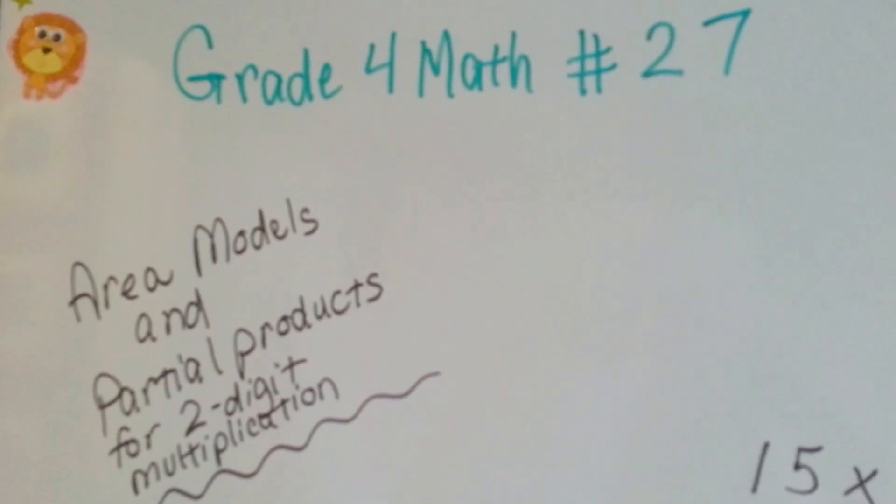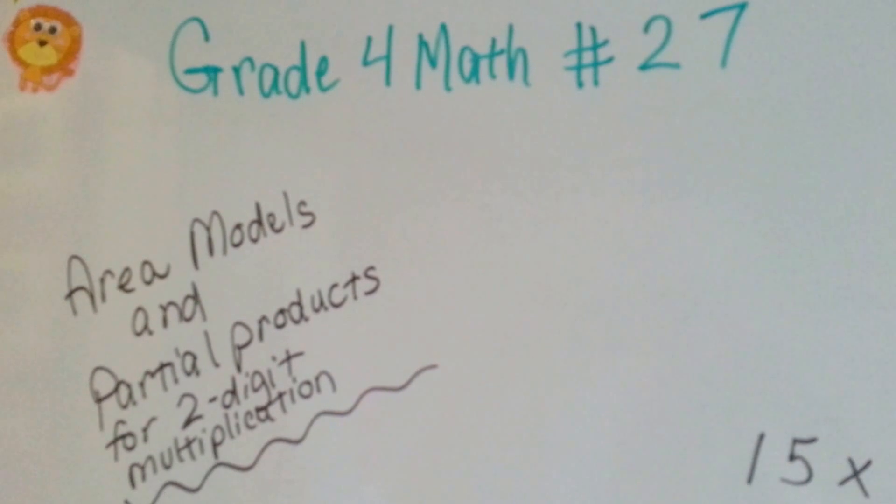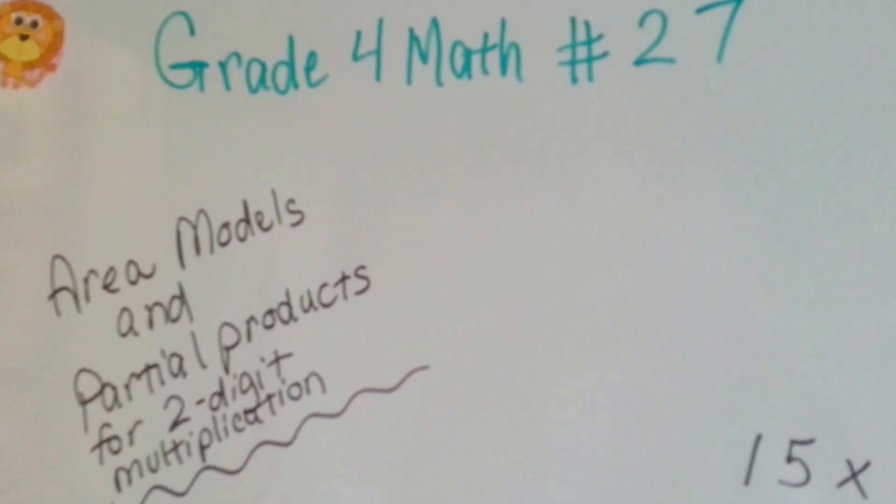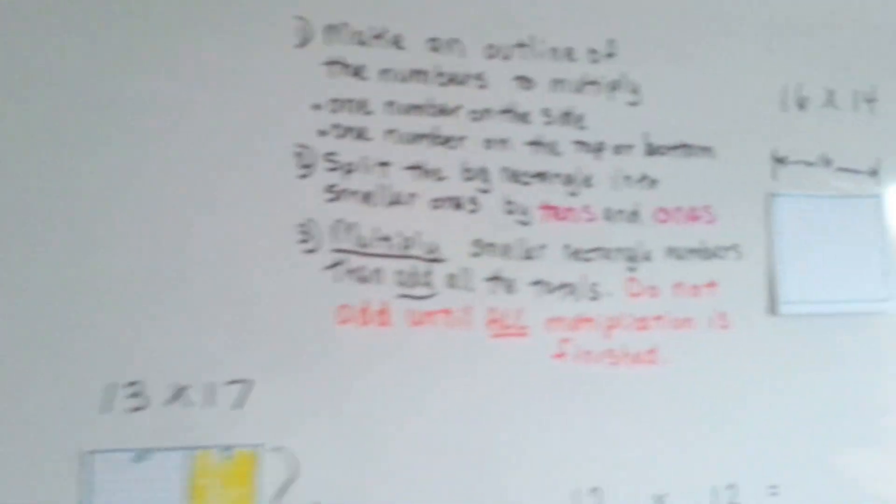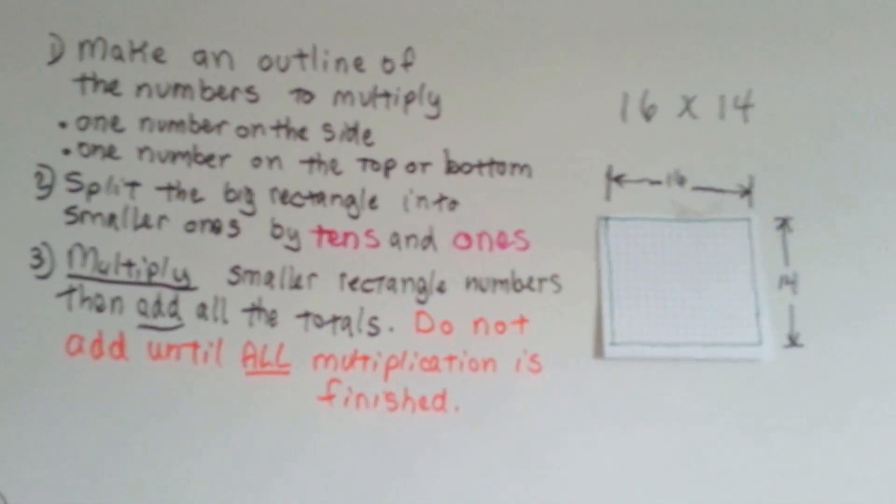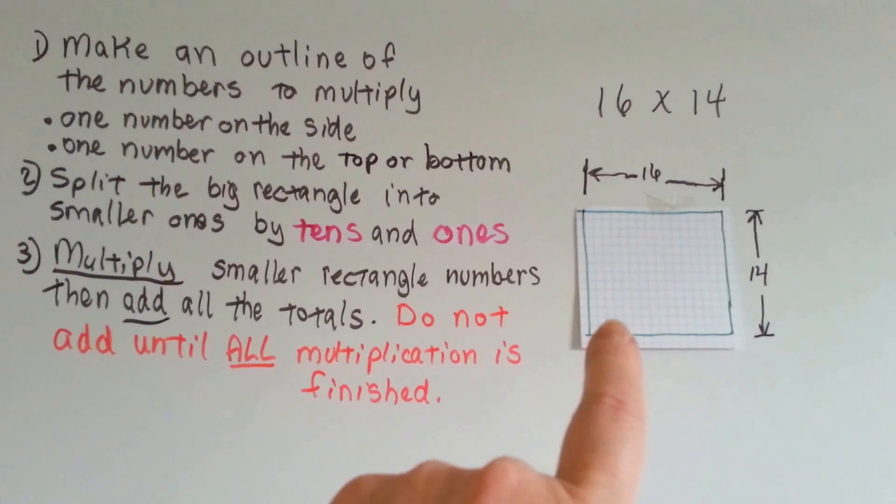Grade 4 Math number 27, Area Models and Partial Products. These are for two-digit multiplication. Here's the partial products we're going to be doing in the area model. We're going to make an outline of the numbers we want to multiply.